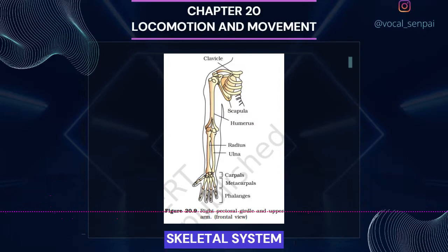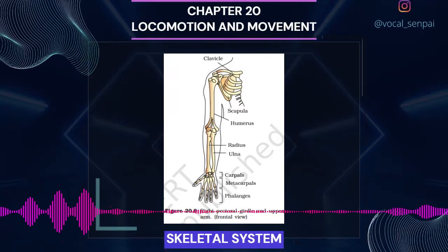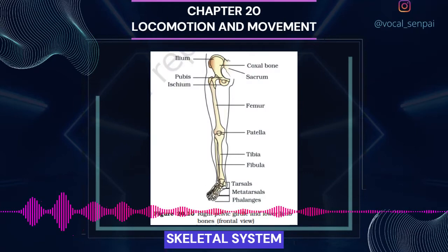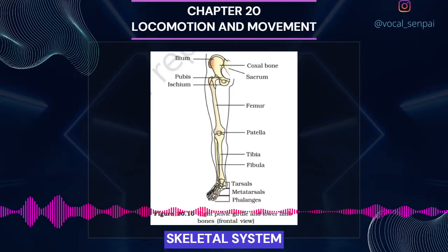Femur (thigh bone, the longest bone), tibia and fibula, tarsals (ankle bones, 7 in number), metatarsals (5 in number) and phalanges (digits, 14 in number) are the bones of the legs (hind limb). A cup-shaped bone called patella covers the knee ventrally, forming the kneecap. Pectoral and pelvic girdle bones help in the articulation of the upper and the lower limbs respectively with the axial skeleton.